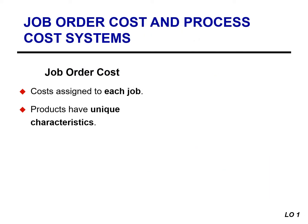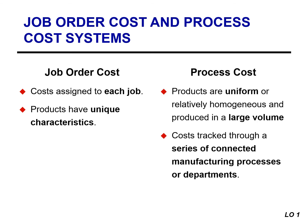In a job order cost system, companies accumulate cost by each job. Job order costing is used when different products with individual and unique features are produced each period. A process cost system produces a large volume of uniform or identical products, and companies track costs by department or manufacturing processes rather than by individual jobs.